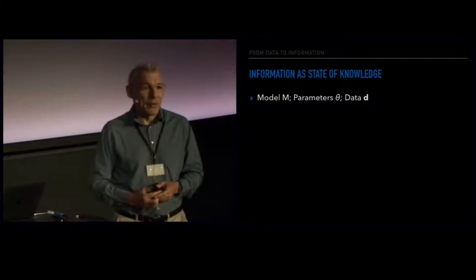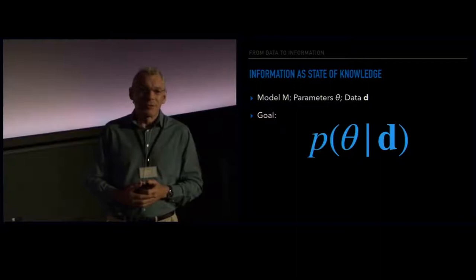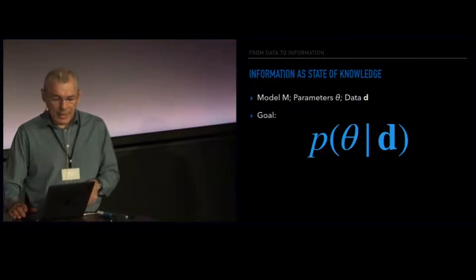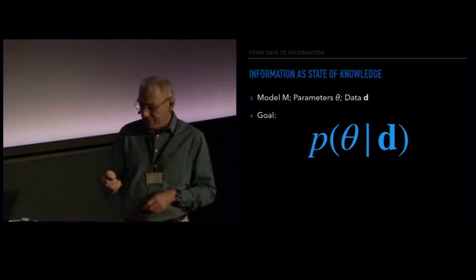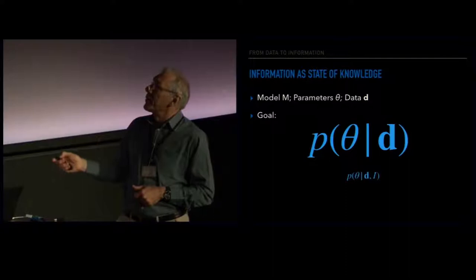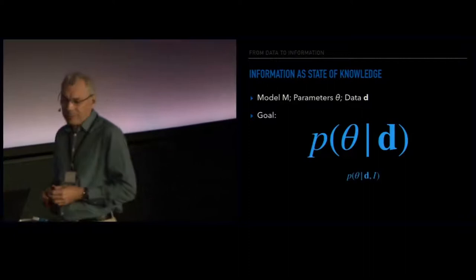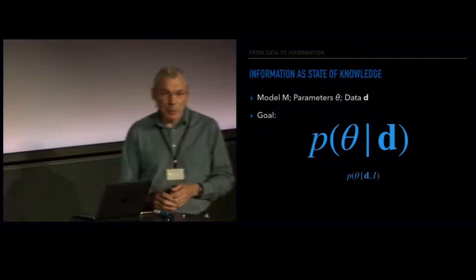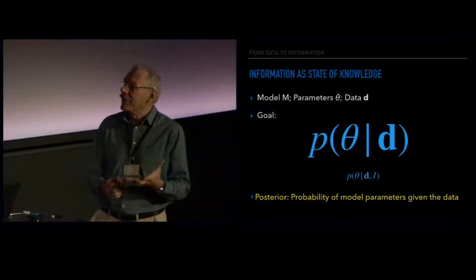Given the data that we have, what is the probability distribution for the parameters of the model? One could extend that to do model comparison and ask what is the probability of the model — Big Bang versus something else, for example. The goal is to work out the posterior probability of the parameters given the data that you've just collected and any prior information. The probability of the model parameters given the data — that is really what the scientific method is trying to achieve. From a Bayesian perspective, that's what you want.